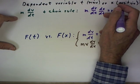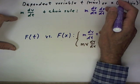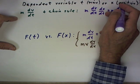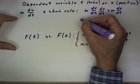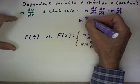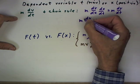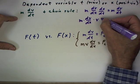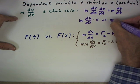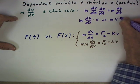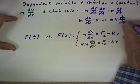But if x is a position function, dx/dt is nothing but velocity. So this is nothing but m dv/dx times v, or m v dv/dx.